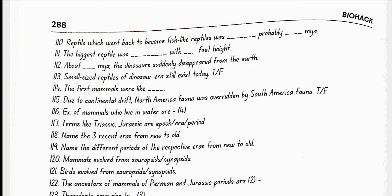Terms like Triassic, Jurassic are Period. Name the three recent eras from new to old: Cenozoic, Mesozoic, and Paleozoic. Periods of eras are: Cenozoic has Quaternary to Tertiary. In Mesozoic: Cretaceous, then Jurassic, then Triassic. Third is Paleozoic: Permian, then Carboniferous, then Devonian, then Silurian.